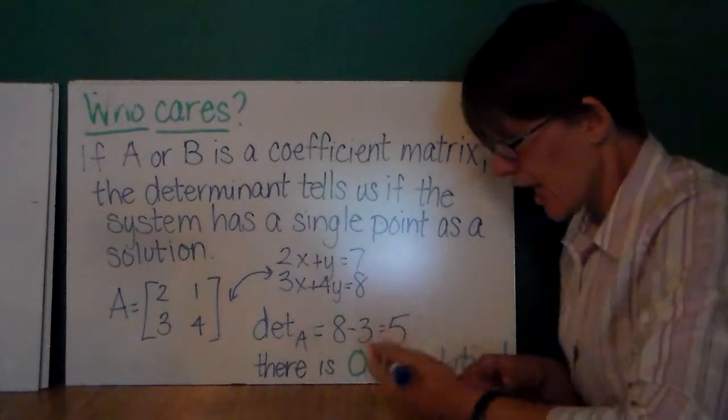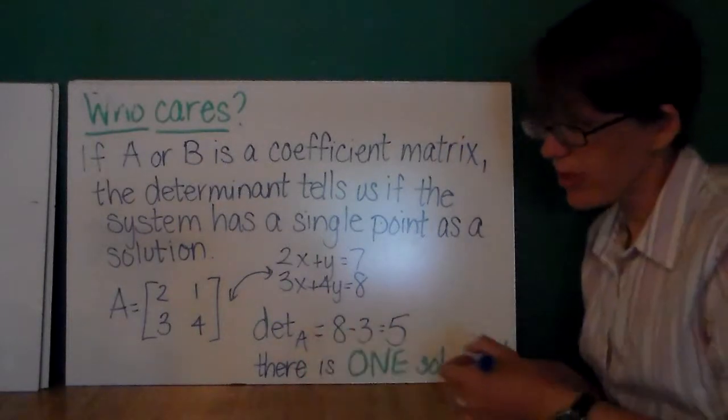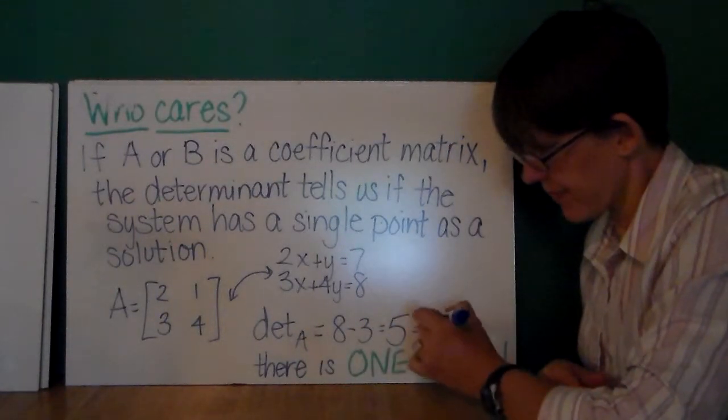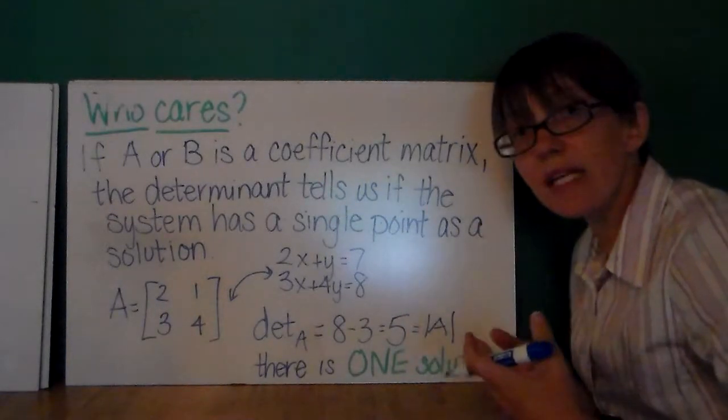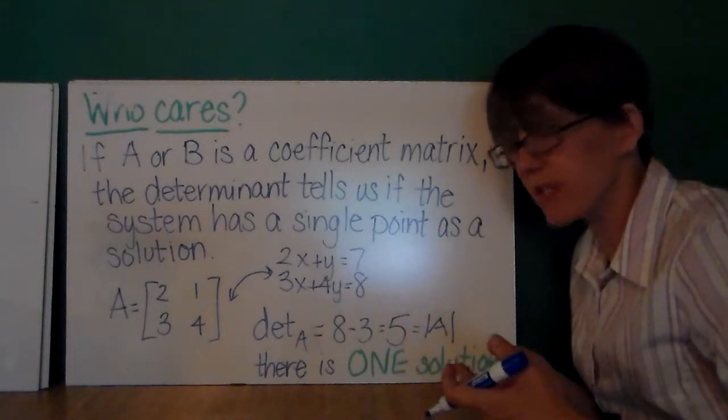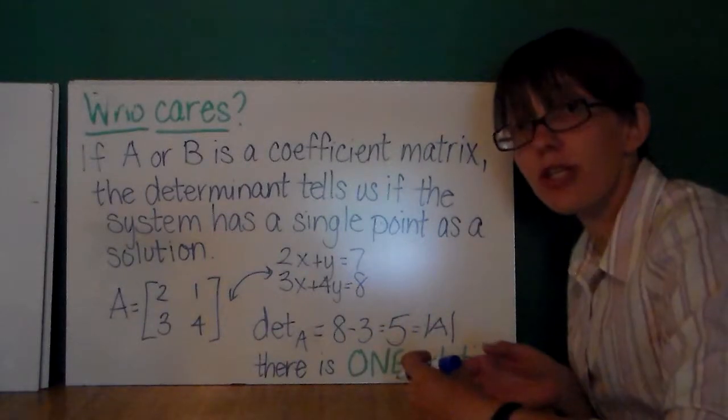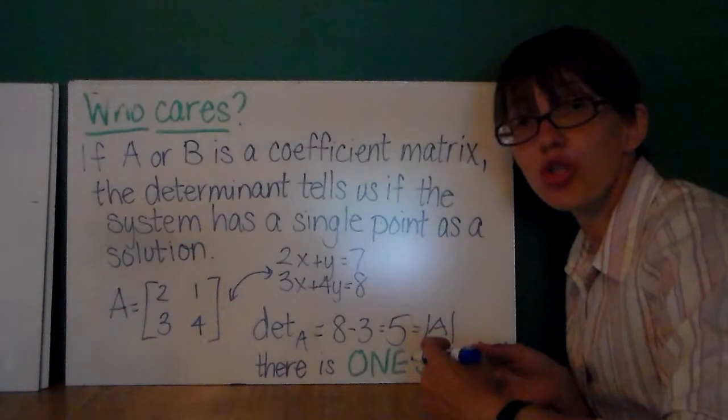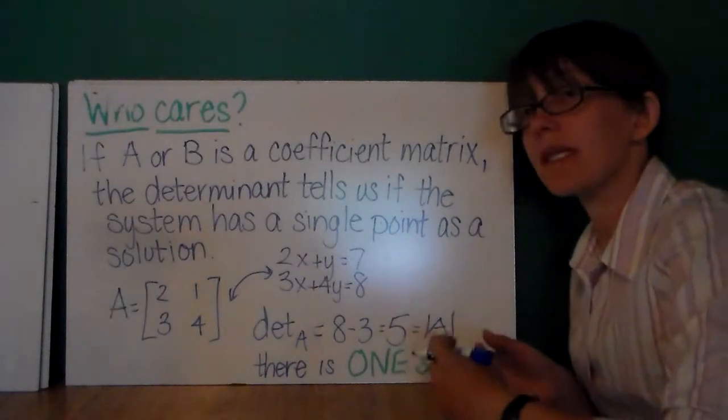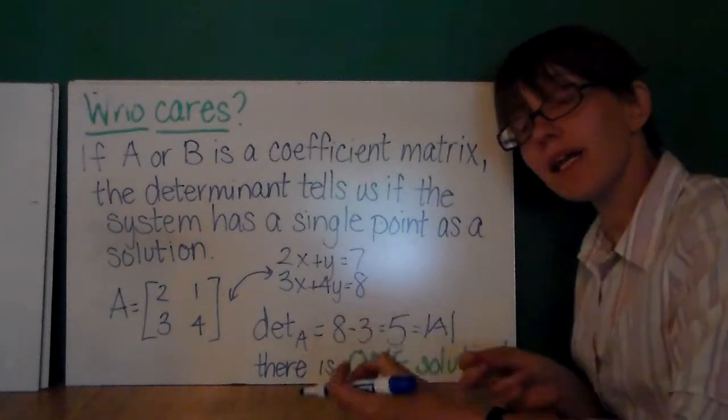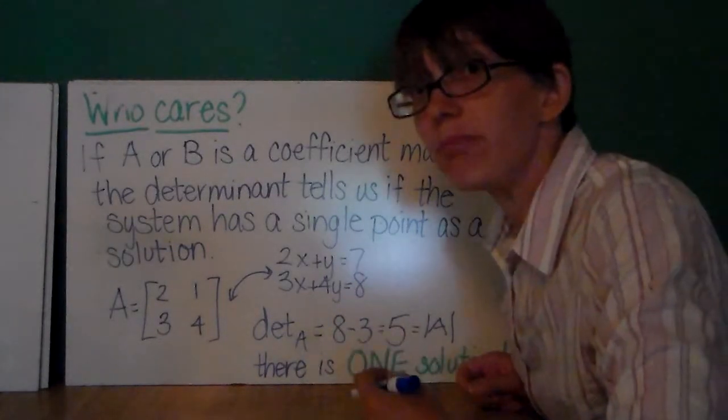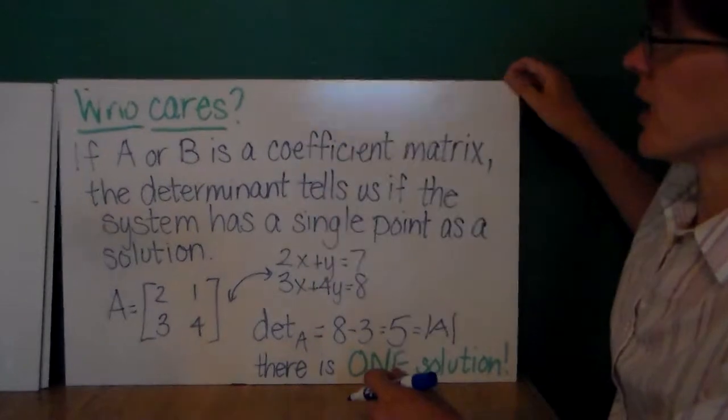2, 1, 3, 4. I calculated the determinant of matrix A to be 5. So, before I've done any real heavy lifting on this problem, I'm able to determine that there is one point in which these two lines intersect. This has one solution. If the determinant were equal to 0, there would be either many solutions or no solution at all.